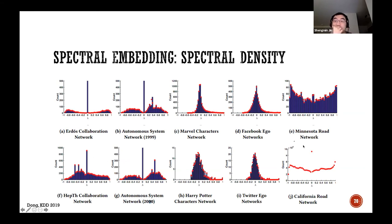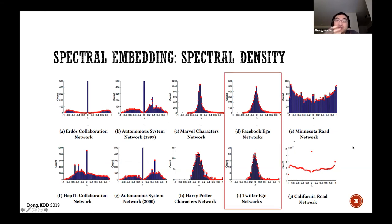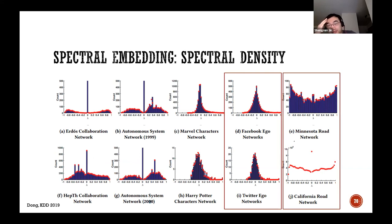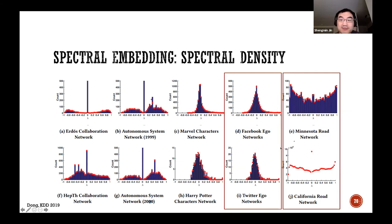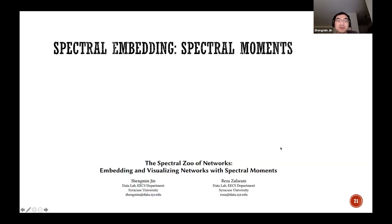Looking at plots of spectral density for different networks in Dong's work: Facebook and Twitter are social networks with similar spectral density patterns, but those patterns are quite different from road networks like Minnesota or California. The spectral density of different networks illustrates different patterns. However, it's not easy to compare spectral densities directly because the number of eigenvalues equals the graph size, so we need measurements or statistics on the spectral density.